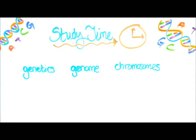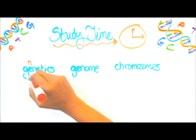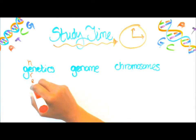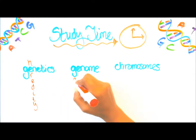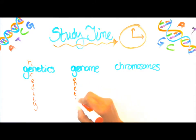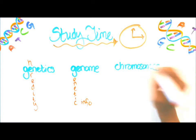It's study time for the terms. We have genetics, genome, and chromosomes. For genetics, it is heredity — we're going to use the E and G to spell heredity. For genome, it is genetic info, so we're going to use the G for genetic and info. For chromosomes, that's a structure containing DNA, so let's use the S for structure.